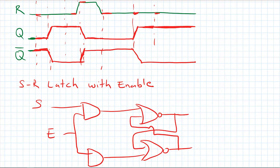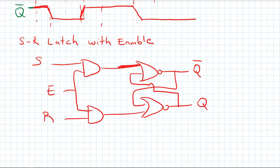I will call this S and I will call this R. So S will be controlling this input. If this input is one, I will get a zero here and one here — so this should be my Q-not and this will be my Q-complement. Let's fill up our functionality table. I have the enable signal and S and R here.